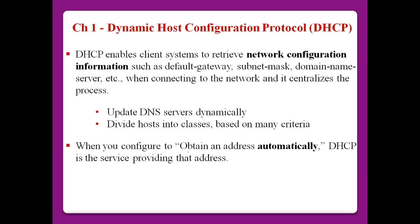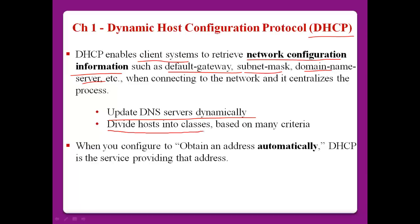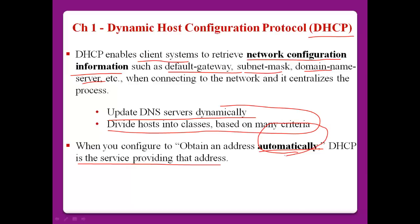Chapter 1: Dynamic Host Configuration Protocol — we normally say DHCP. DHCP enables client systems to retrieve network configuration information such as the gateway, subnet mask, and domain name service when connecting to the network, and centralizes the process. DHCP supports client systems to get network configuration information automatically, and also supports updating the DNS server dynamically.